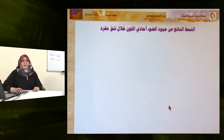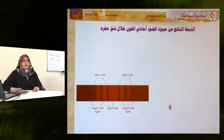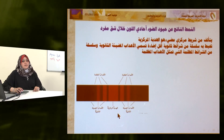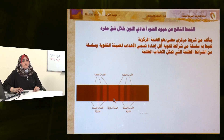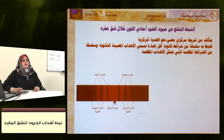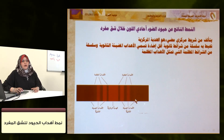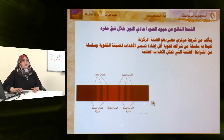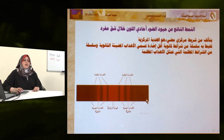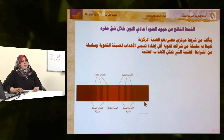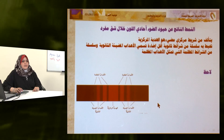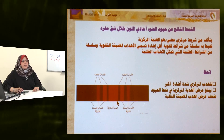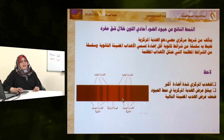النمط الناتج عن حيود الضوء أحادي اللون خلال شق مفرد: عند سقوط الضوء على شق مفرد يتكون على الشاشة أهداب؛ الهدب المركزي هو الأكثر إضاءة، يتبعه على الجانبين سلسلة من الشرائط المضيئة أقل إضاءة وشرائط مظلمة تمثل الأهداب المظلمة. عرض الهدب المركزي أكبر من ضعف عرض الهدب الذي يليه.